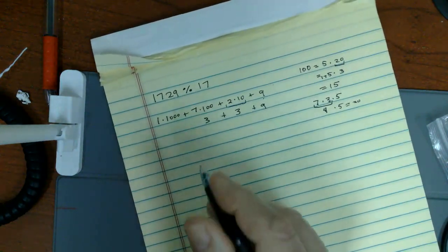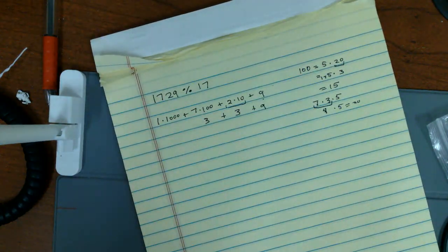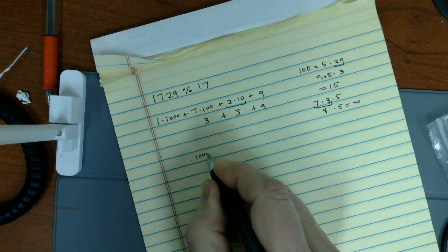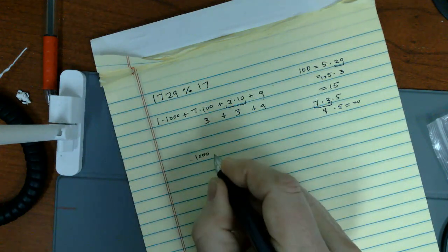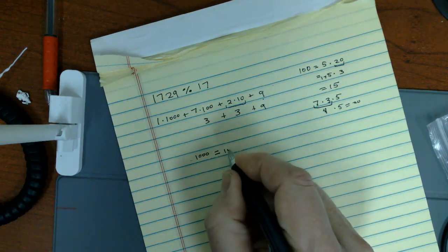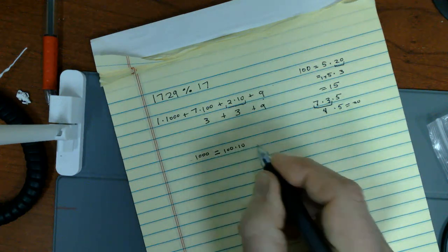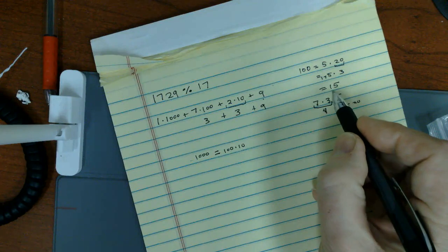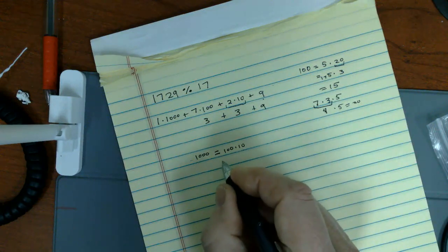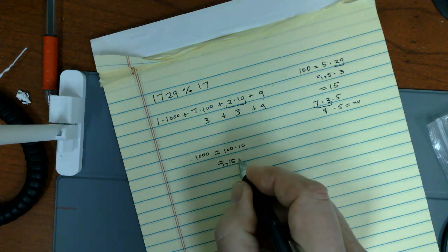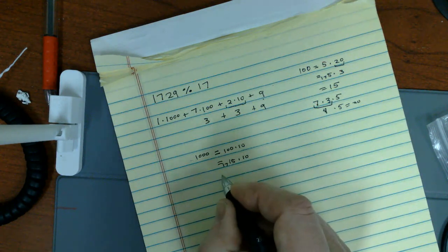Then I have a thousand. So 1,000 is equal to 100 times 10. 100, right, we figured was equal to, mod 17 is equal to 15 times 10.